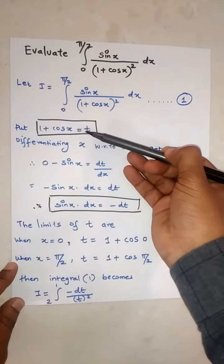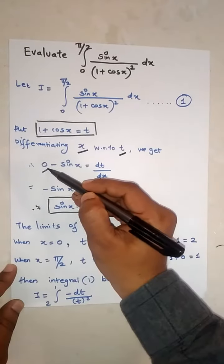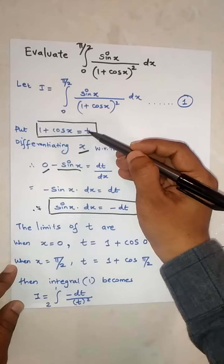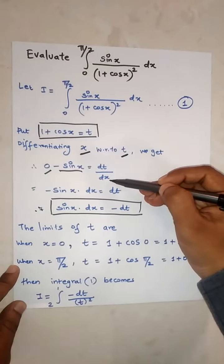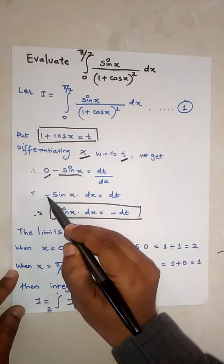Differentiating: the derivative of 1 is 0, and the derivative of cos x is negative sin x, which equals dt/dx. Moving dx to the other side and the minus sign to the right, we get sin x dx equals negative dt.